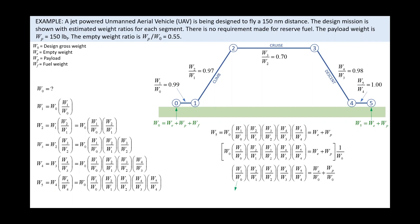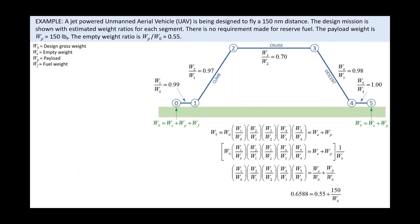Next, we can plug and chug our weight ratios and payload as shown. The product of the weight ratios returns 0.6588 and this must equal the empty weight ratio of 0.55 plus the unknown payload ratio given by 150 pounds divided by W0. Let's move it over here and solve for W0.